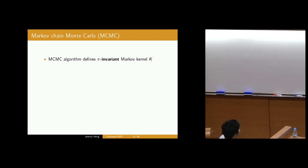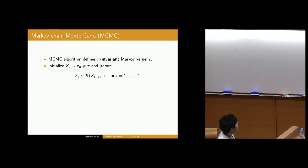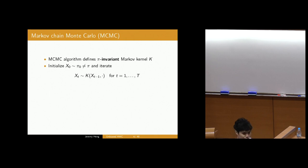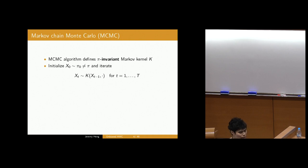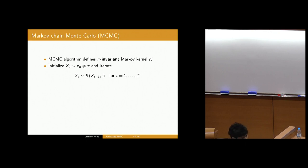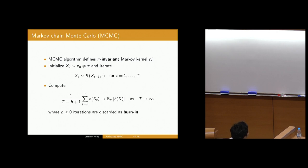Roughly speaking, you can think of each MCMC algorithm as defining a pi-invariant Markov kernel, which I'll denote by k. The algorithm is quite simple. You initialize the Markov chain x_0 from an initial distribution pi_0, which I'll assume is not pi, so we're not doing perfect simulation, and pi_0 might be possibly quite far away. We then iterate by simulating the next state x_t given x_{t-1} by sampling from the Markov kernel k, iterating for capital T samples. We then return this estimator given by the sample average with possibly some burn-in b.